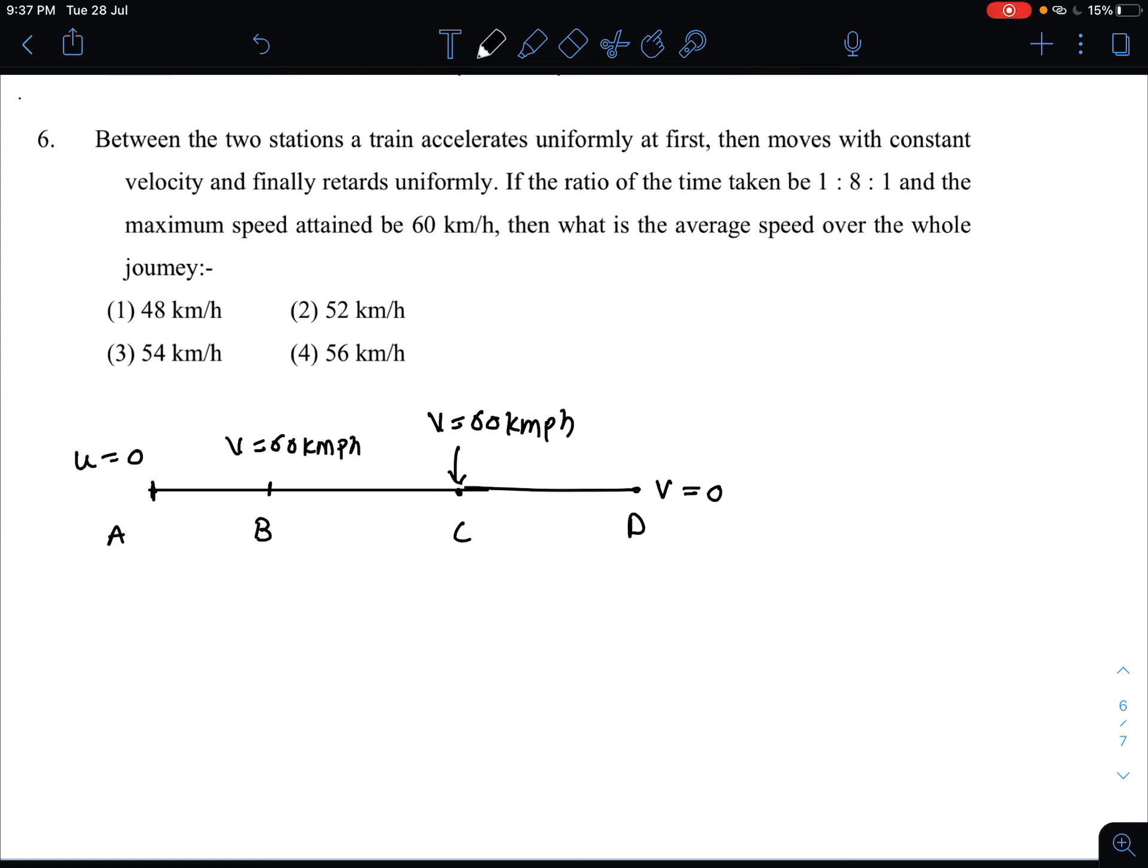Then slowly retards and at position D the velocity is 0. The time ratio is given 1:8:1. This means A to B is time t, B to C is 8t, and C to D is t.